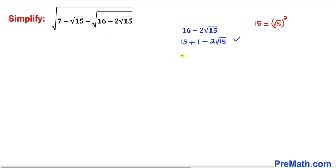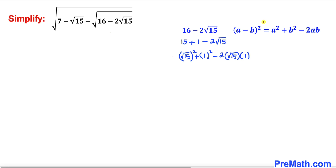Therefore this expression could be written as square root of 15, whole squared, plus 1 squared, minus 2 times square root of 15 times 1. Now let's recall the famous identity: a minus b, whole squared, equals a squared plus b squared minus 2ab. If we call square root of 15 as a and 1 as b, then this whole thing could be written as square root of 15 minus 1, whole squared.